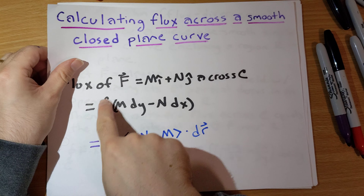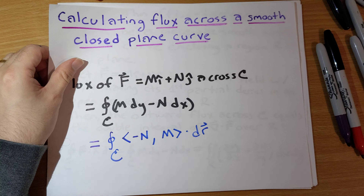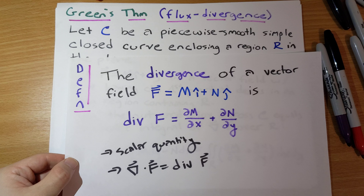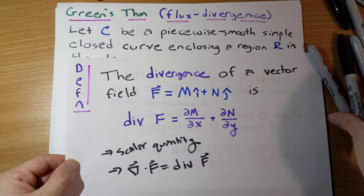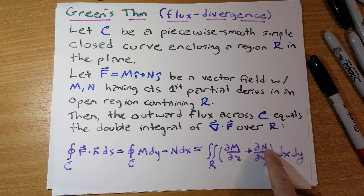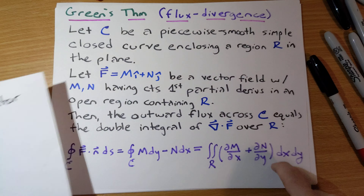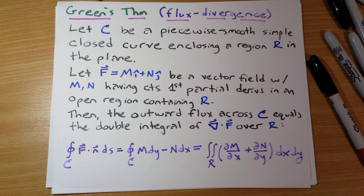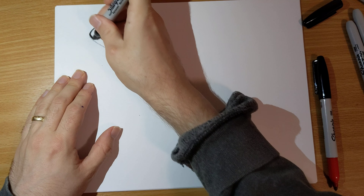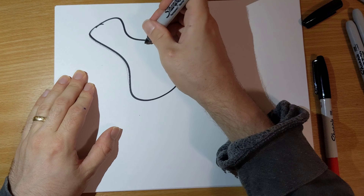More carefully, this expression is the flux — remember flux from section 16.2. The integral of M dy minus N dx is how we usually compute flux. And the expression we're integrating in terms of partial derivatives is exactly the divergence of F: the partial derivative of M with respect to x plus the partial derivative of N with respect to y, times dA. So this is the flux-divergence version of Green's theorem.